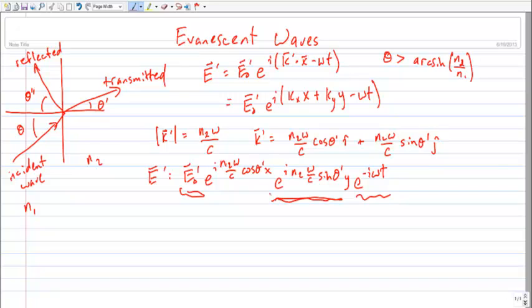Sine theta prime? Well, no, that's always going to have a real solution for sine theta prime. Sine theta prime is always going to be a real number. It may be a real number greater than one, but it's always a real number. So there's really nothing in that term that can break. So what about that little bugger right there? What might go wrong?